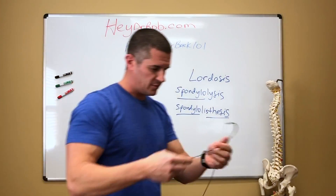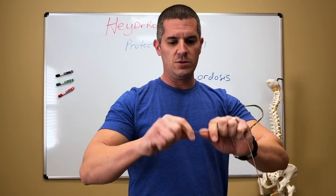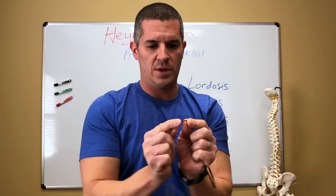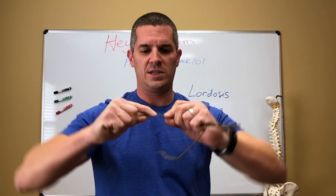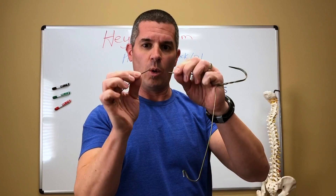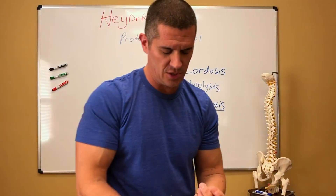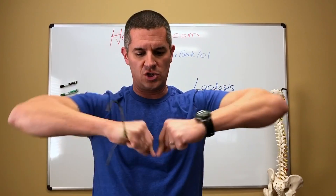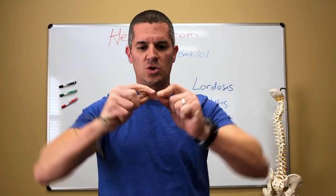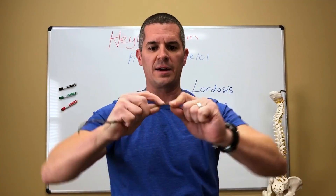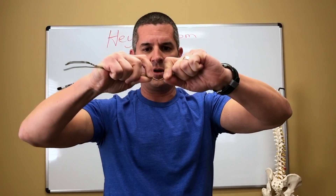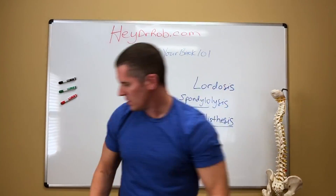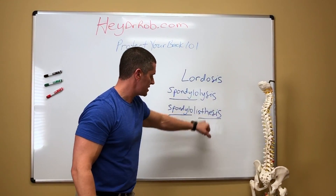The best analogy I can give you: take a coat hanger and bend it over and over and over again. What happens? It breaks — that's a perfect example. What you'll see before the break is a stress mark. Often people with these injuries will start feeling some back pain, which is analogous to what's happening at that spot in the bone. You can feel it getting really weak — there's a stress line right there — and then a couple more bends and bam.